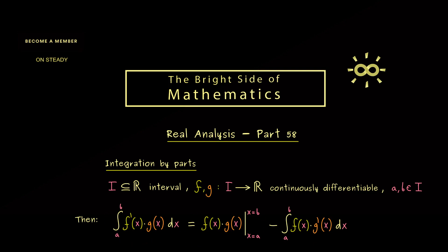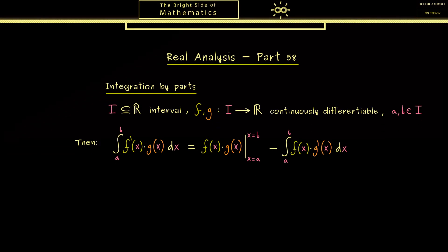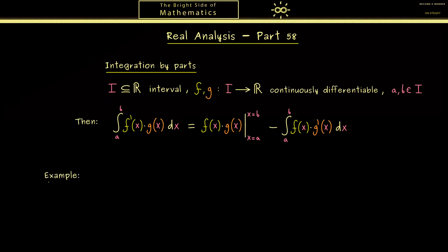For example, this one could be easier to solve, and then with this formula you have solved the original integral as well. Therefore, let's immediately look at an example. After this one, I will show you the proof. The example should not be so complicated. Let's take the function x times the exponential function of x.